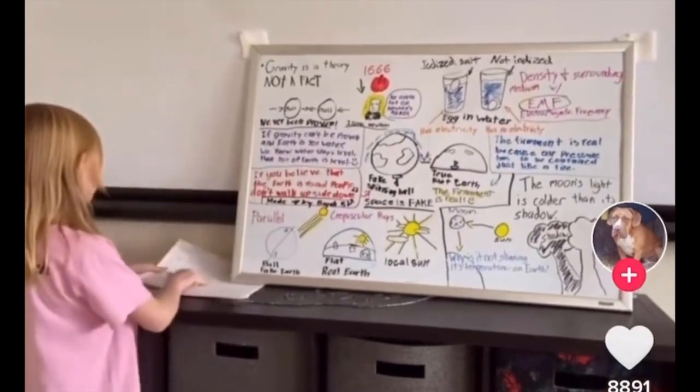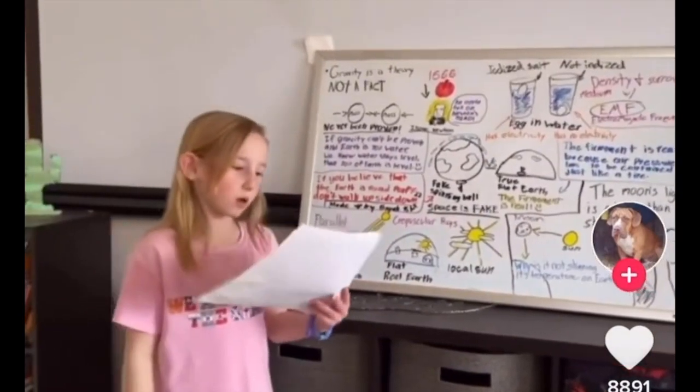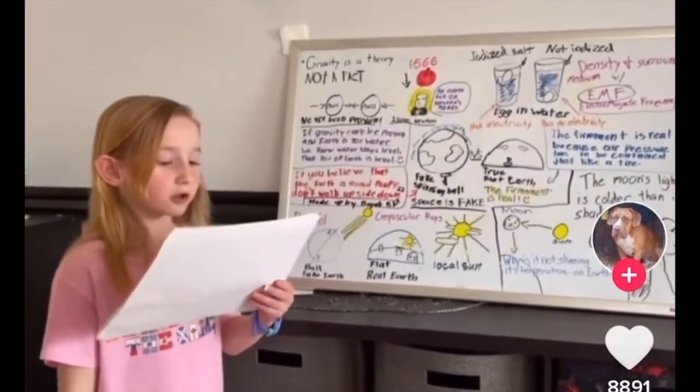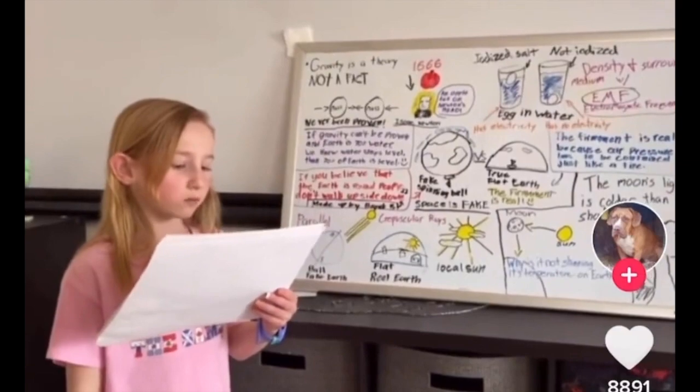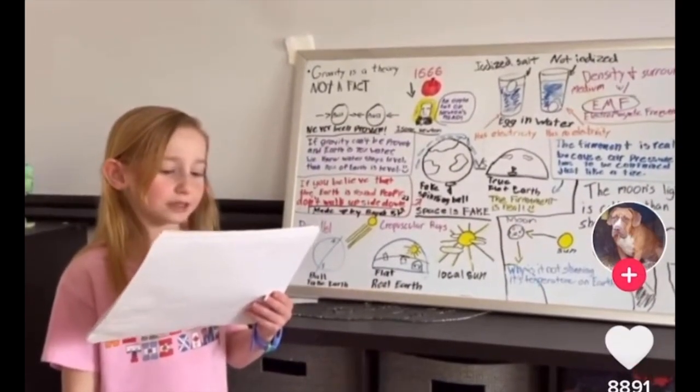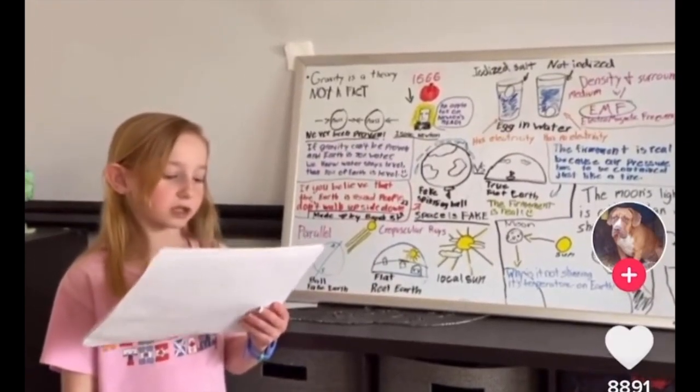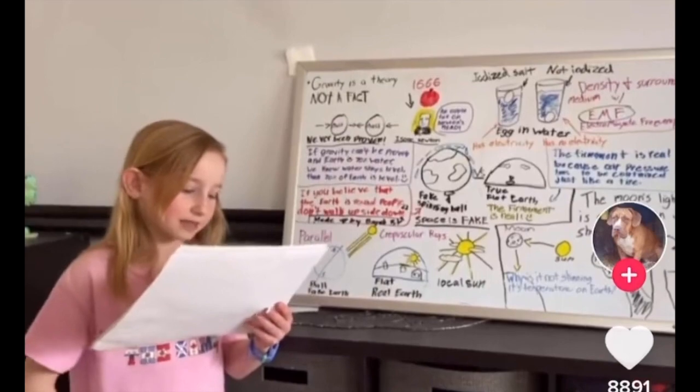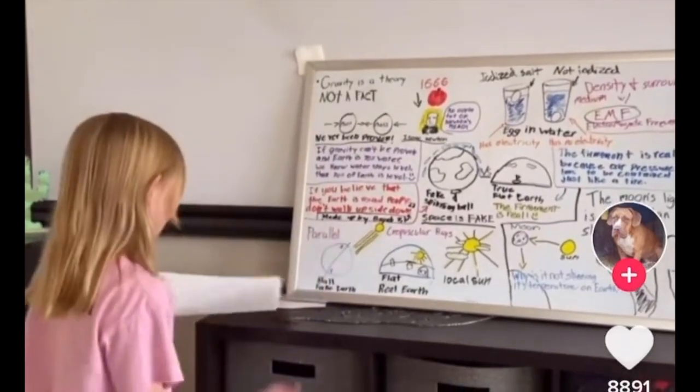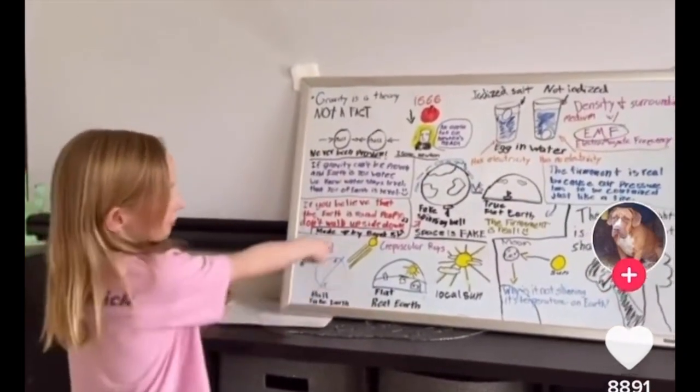Now we are going to move on to seasons and the sun. The spinning ball globe believers say that the sun is 93 million miles away. All you have to do is use your God-given eyes to see we have crepuscular rays from the sun. Crepuscular rays prove we have a local sun.